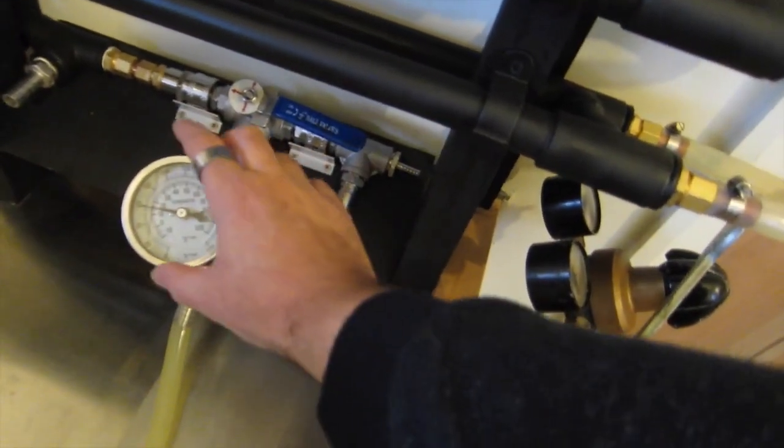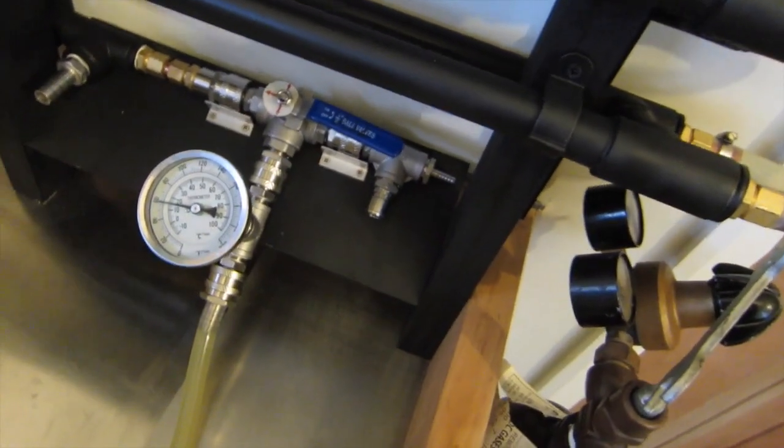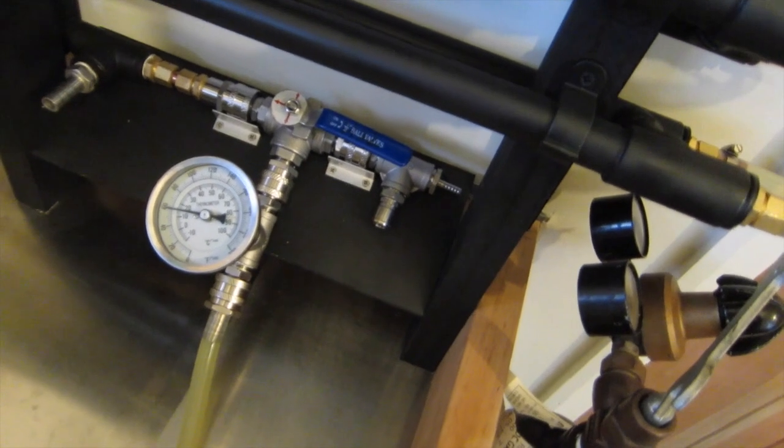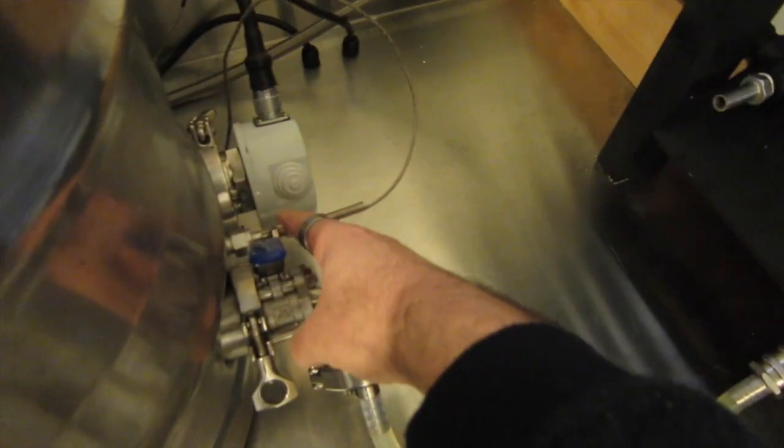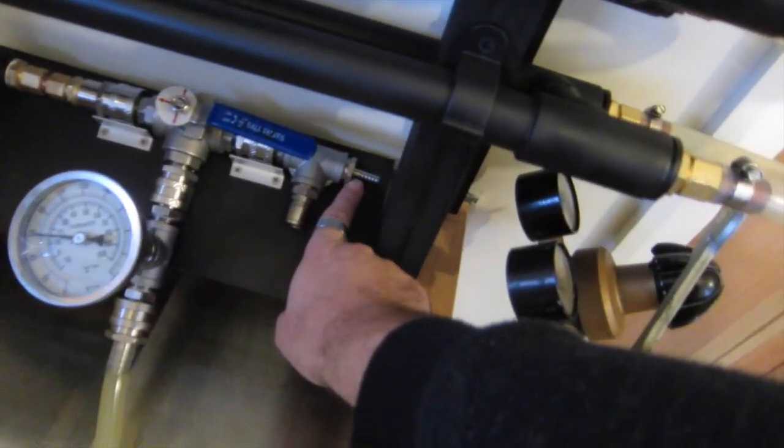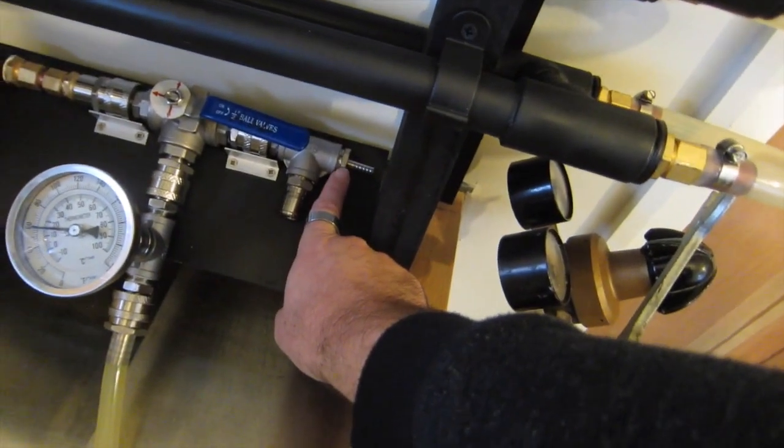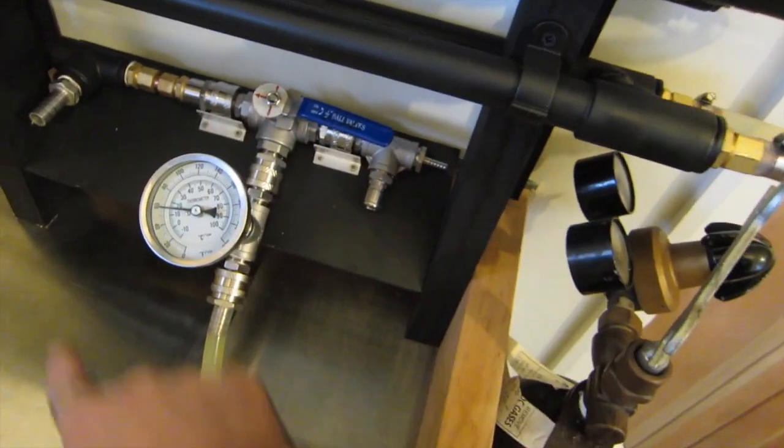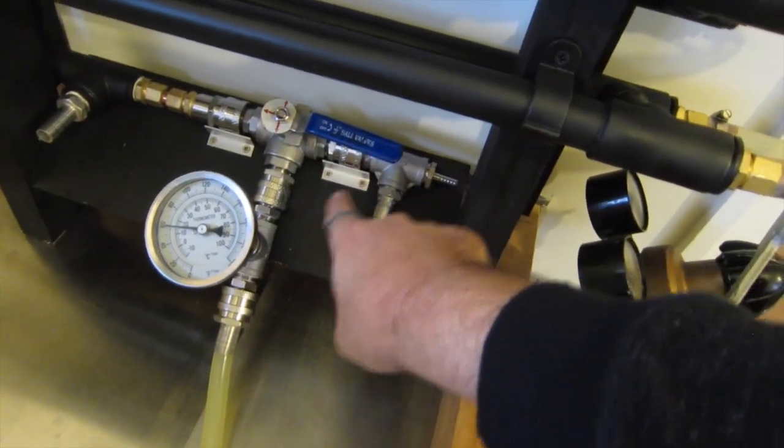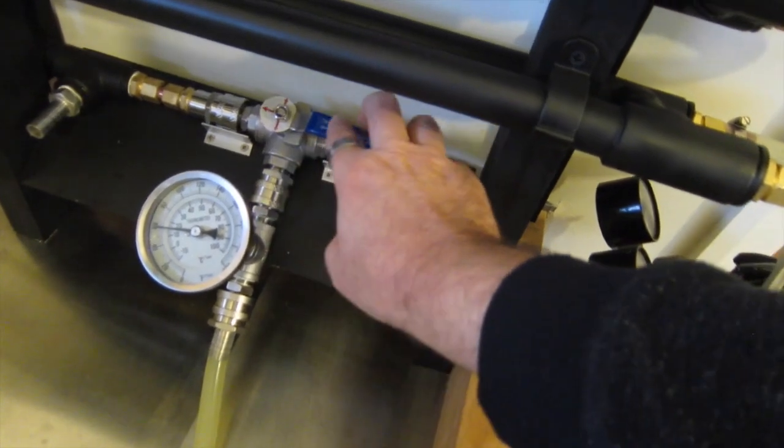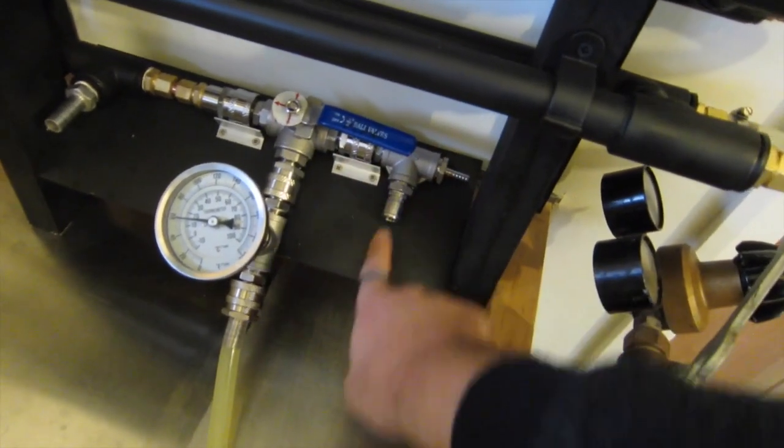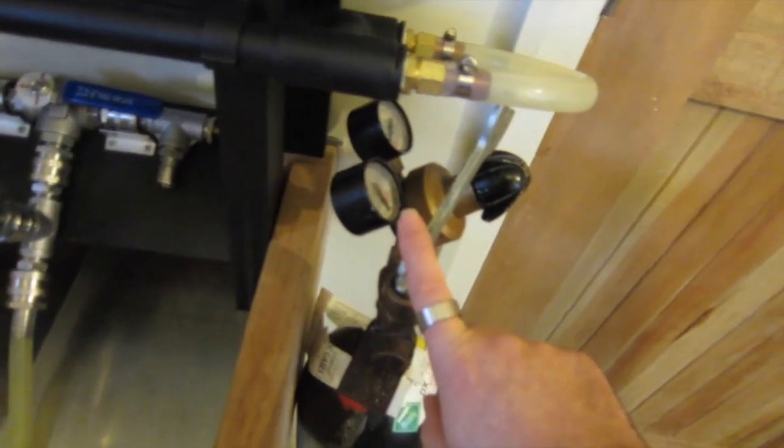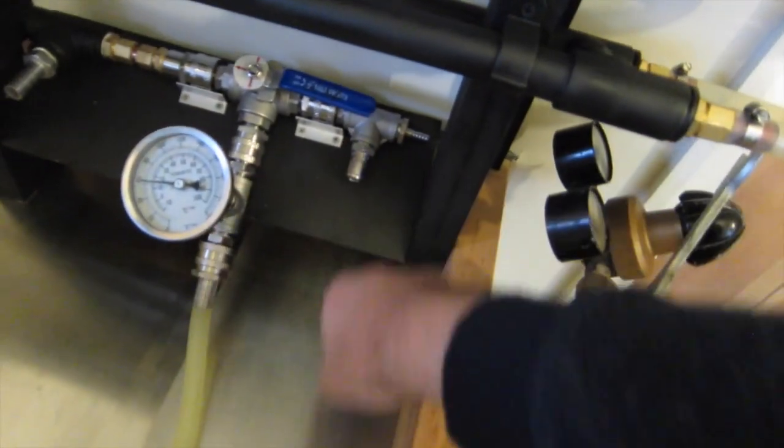Down here I have a temperature gauge just for shits and giggles, just so I can see the temperature of the wort coming out, and I also have a stainless steel aeration stone inside this T-joint. Once I've finished recirculating, I can flip this T-ball valve around and the beer will come out here, hook it up to my oxygen, and aerate the wort.